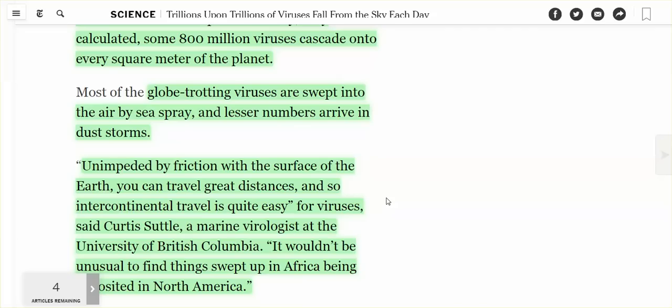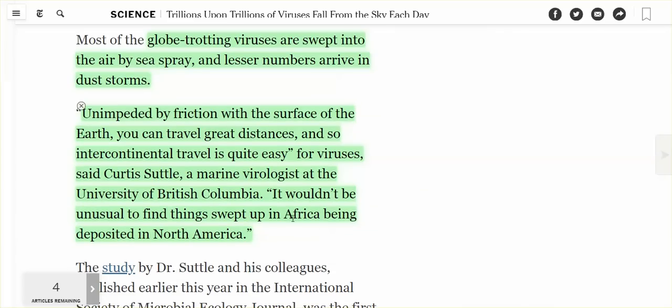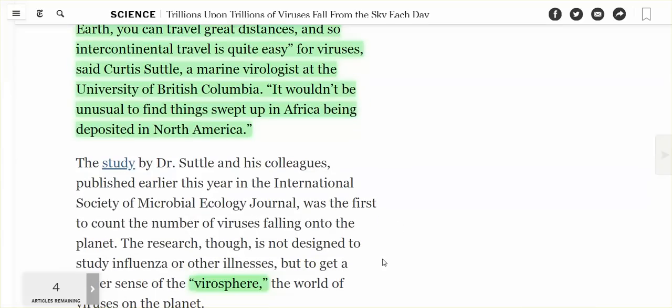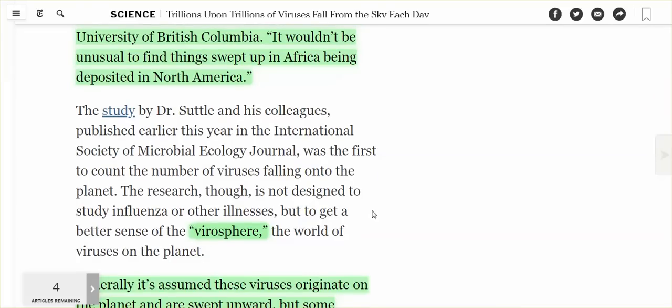Unimpeded by friction with the surface of the earth, you can travel great distances. And so intercontinental travel is quite easy for viruses. That came out of the mouth of a marine virologist at the University of British Columbia. It wouldn't be unusual to find things swept up in Africa being deposited in North America. The virusphere. Oh, so they want to name this above the weather system, below where the planes fly, the virusphere.